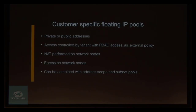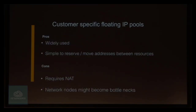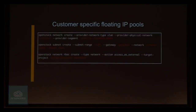You can also create customer-specific floating IP pools. It's basically the same approach, but you use access control by creating RBAC rules with an 'access as external' policy, which limits the network to certain customer projects. So a customer can have their own floating IP pool. The pros and cons are basically the same, except that it is not shared between customers, so you can use this for specific customer needs. The key difference is using the RBAC create command with an 'access as external' policy for the specific network, making it visible only to that project as an external network.